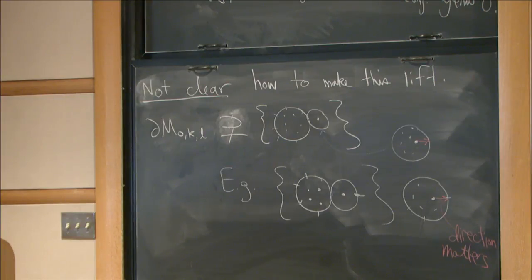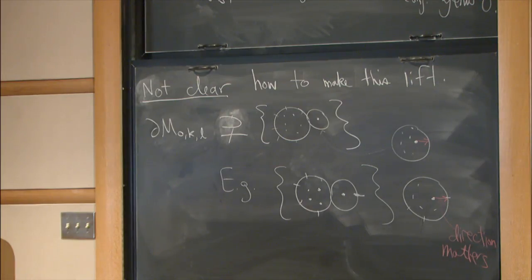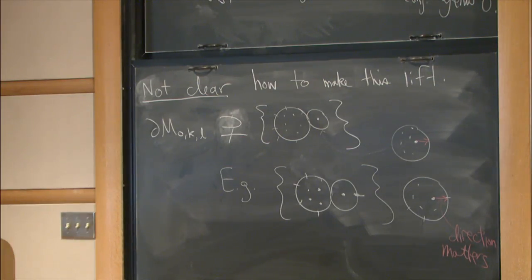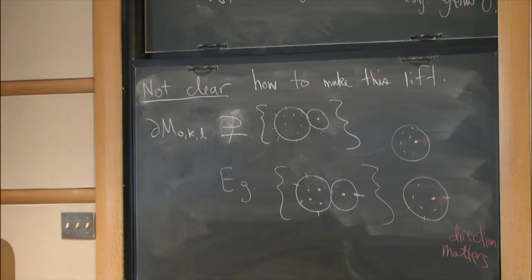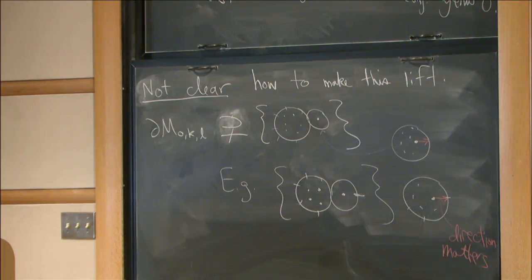We have to somehow promote these classes to relative cohomology, and we don't know how to do that directly. But here's the trick: take E to be the direct sum of these line bundles. The Euler class of E equals the product of the first Chern classes C_1(L_1)^{a_1} · … · C_1(L_L)^{a_L}. So all we have to do is lift the Euler class to relative cohomology.